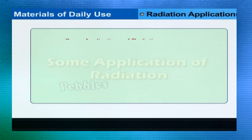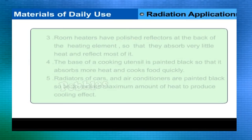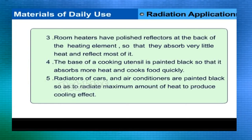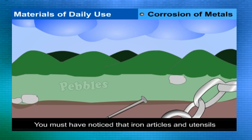Applications of radiation: white and light-colored clothes are suitable in summer as they absorb little heat. Dark-colored clothes are suitable in winter as they absorb more radiant heat. Room heaters have polished reflectors at the back to reflect heat outward. The base of a cooking utensil is painted black to absorb more heat. Radiators of cars and air conditioners are painted black to radiate maximum heat for cooling.